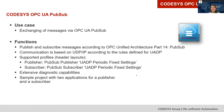What we provide with our library called OPC UA PubSub is the possibility to exchange messages via the OPC UA PubSub protocol between different controllers. You can publish and subscribe to messages according to OPC Unified Architecture Part 14, which defines the PubSub protocol. The communication is based on UDP-AP according to the rules defined by the OPC UA Foundation, named UADP.